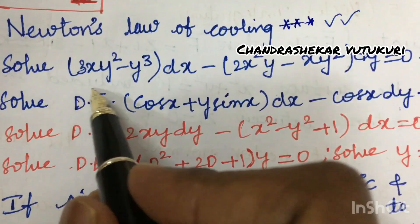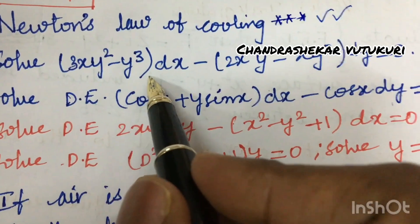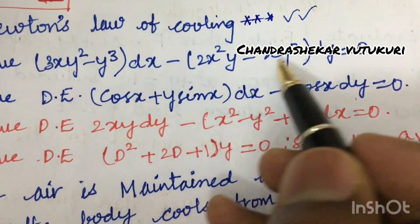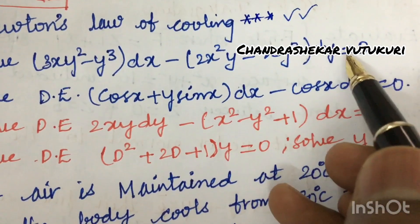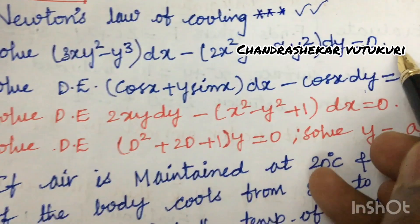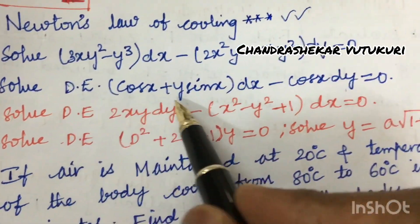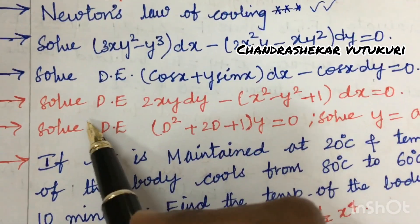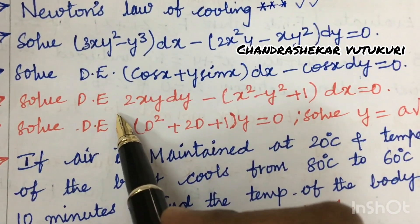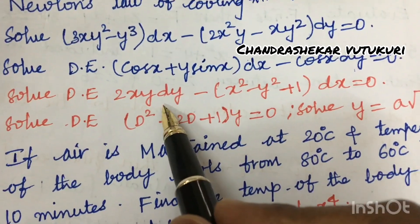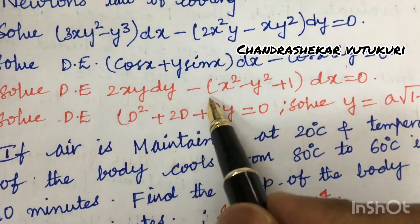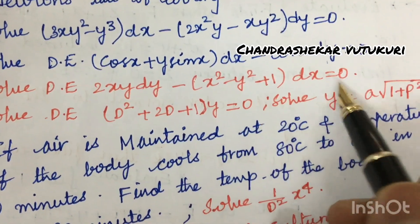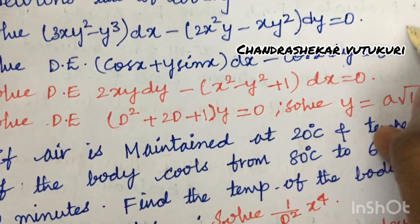Solve the equation (3xy² - y³)dx = (2xy - xy²)dy = 0. Also solve the differential equation 2xy dy - (x² - y² + 1)dx = 0.